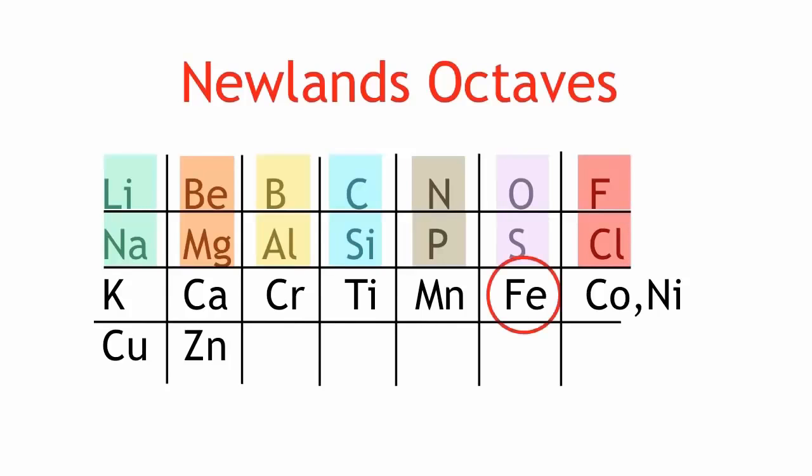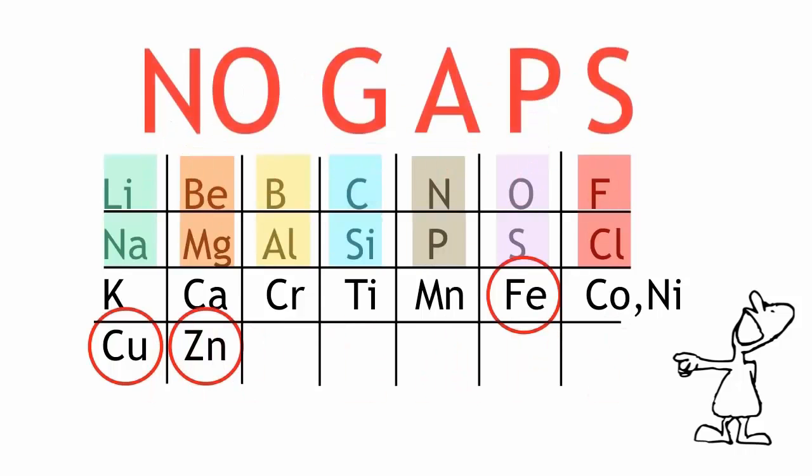With the transition metals like iron, copper, and zinc causing a massive flaw in his theory, his theory was met with ridicule. But he was close. The problem with his arrangement was that he left no gaps.